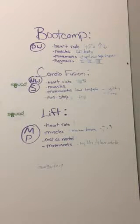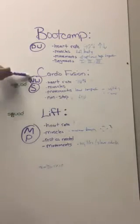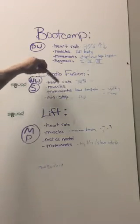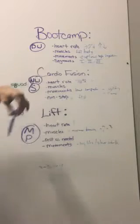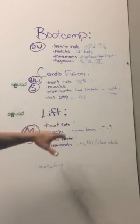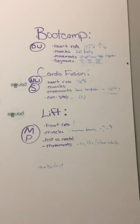Quick recap: Boot camp — heart rate goes up and down, very high at peak periods, full body explosive high-impact movements done in segments with breaks in between, and a dynamic warm-up before. Cardio Fusion — no warm-up, heart rate around 70%, lower-impact movements sustained over a longer time frame, focus on agility and core, non-stop workout with a stretch routine at the end. Lift class — not worried about heart rate, focused on maximum muscular tension, rest as needed between sets, and mobility and priming before the workout starts.